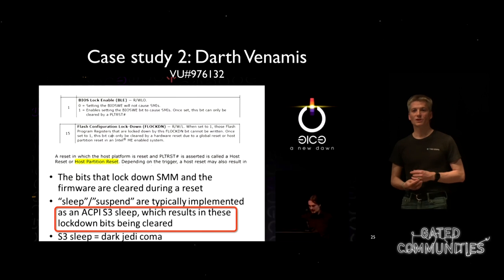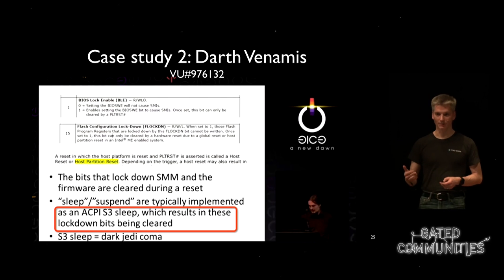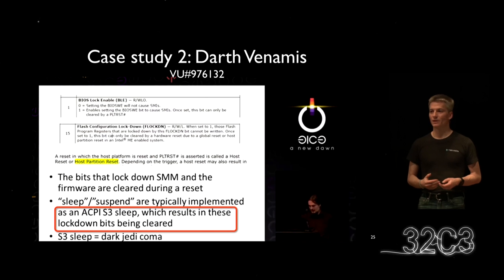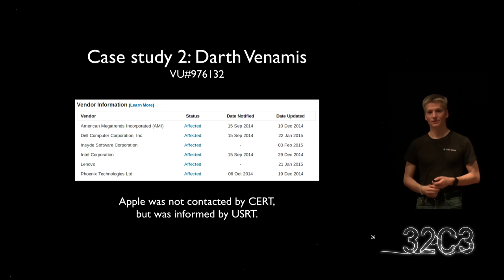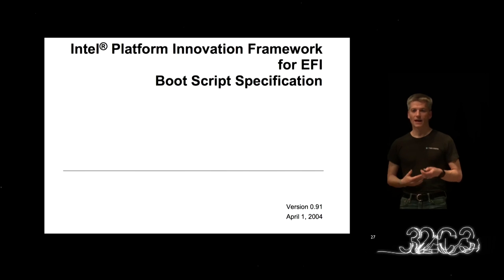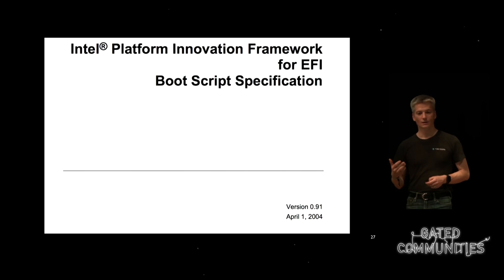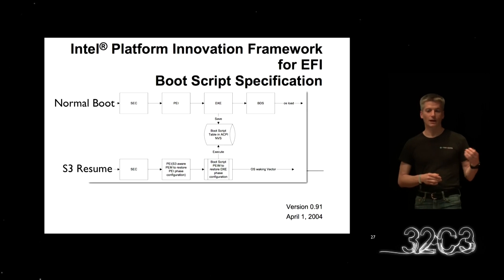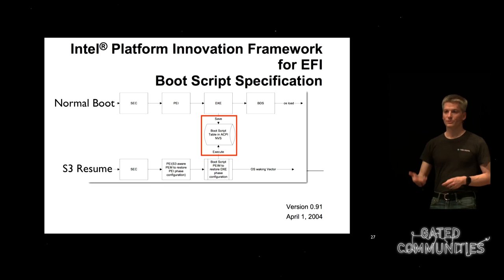What they realized is that when the system goes into an S3 suspend-to-RAM sleep, all of the flash protection bits get unlocked. When the system comes out of sleep, there's a brief race window that allows an attacker to have write access to the firmware. Apple was not contacted by CERT regarding this, but was informed through USRT. To understand how to take advantage of this vulnerability, we have to go back to the boot script specification, which describes how EFI goes through a normal boot and then resumes.